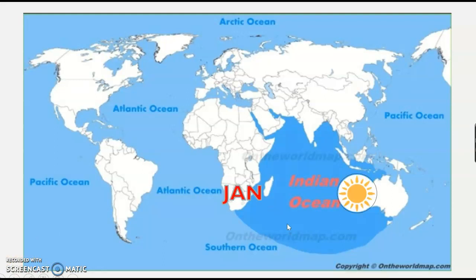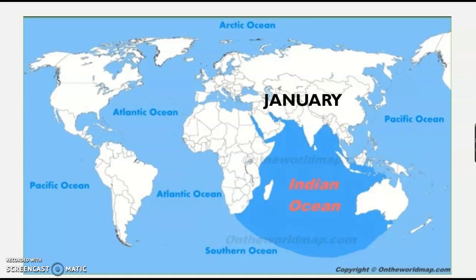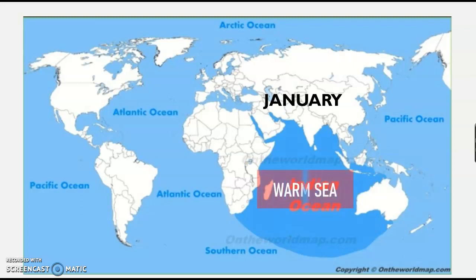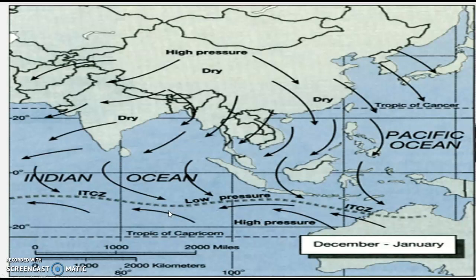In January, the sun is over the southern hemisphere, so the southern hemisphere is in summer and the northern hemisphere is in winter. In July, the sun is straight over the northern hemisphere. From the surface to 4 km level, wind moves from cold area to warm area. In January, the northern hemisphere is cold and southern hemisphere is warm, so the wind moves from the northern hemisphere to the southern hemisphere. This is the wind pattern in the December to January period.